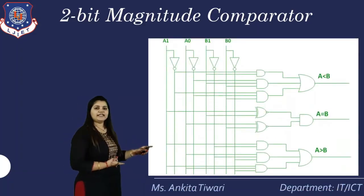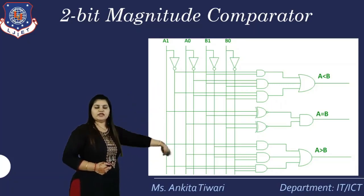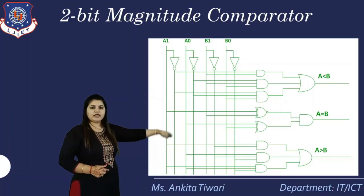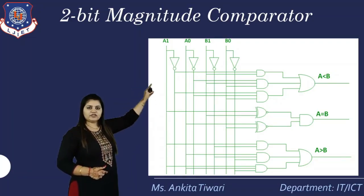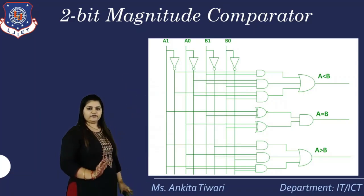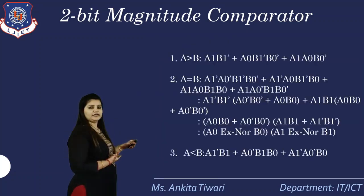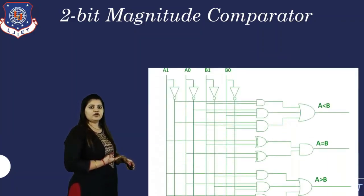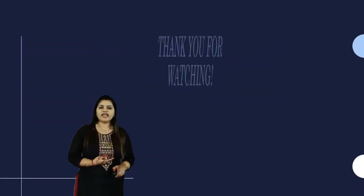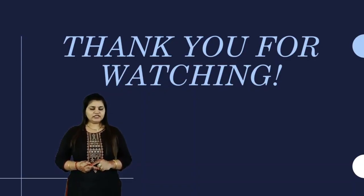The two-bit comparator circuit produces three outputs: a less than b, a equal to b, and a greater than b. The inputs in variable form are a0, a1, b0, and b1, along with their complements as needed. This is the complete logic circuit of the two-bit magnitude comparator. We have covered comparators with one-bit comparison, two-bit comparison, and noted that four-bit comparison follows the same approach as two-bit. This concludes our study of Comparators. Thank you.